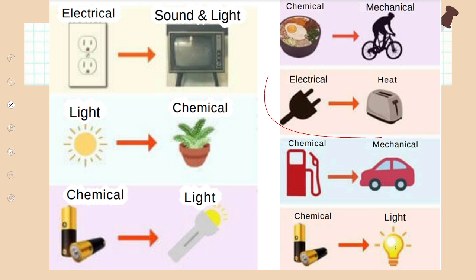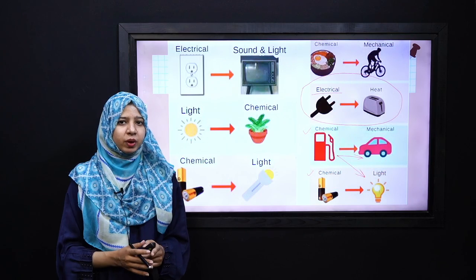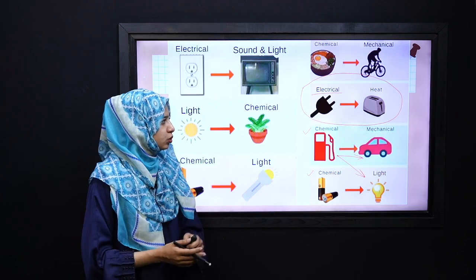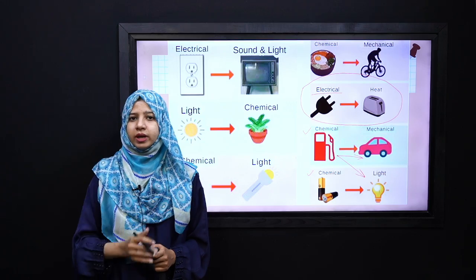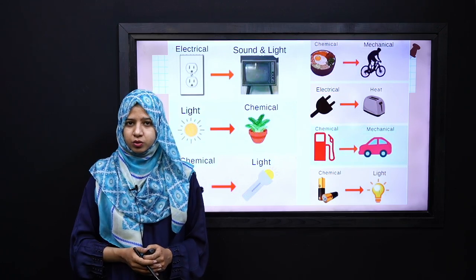We take some more examples: electrical energy can be transformed into heat energy. In this way, if we take chemical energy, it can be transformed into mechanical energy and light energy. In this way we have many examples where energy is converted from one form to another.